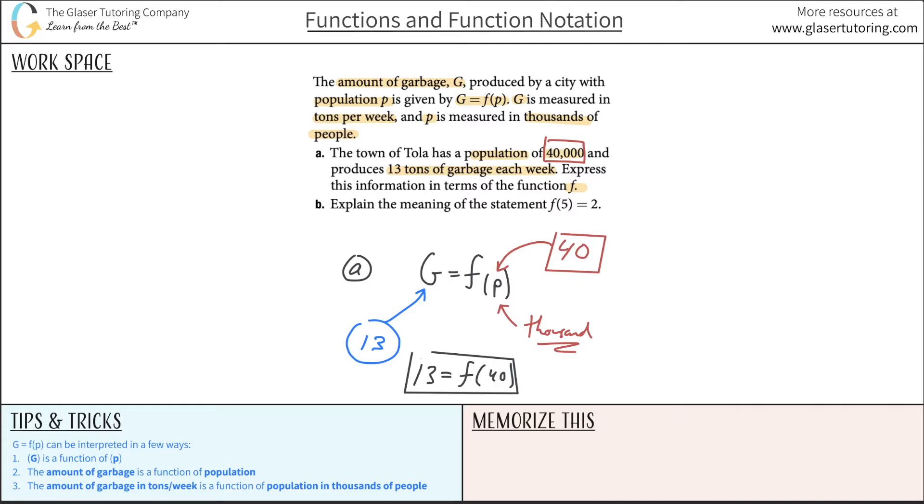To answer letter A, it's simply going to be 13 is equal to F of 40. And that's it. Seems really odd, right? It's so simple at the end here, but the interpretation is really difficult. So now let's take a look at part B.